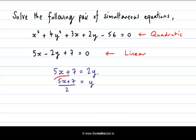This value here is equal to y and I'm going to substitute it in instead of this value y and this value y. And then my quadratic equation will be expressed only with x's because I will have x squared plus 4 times 5x plus 7 over 2 all squared plus 3x plus twice 5x plus 7 over 2 minus 56 equal to 0.